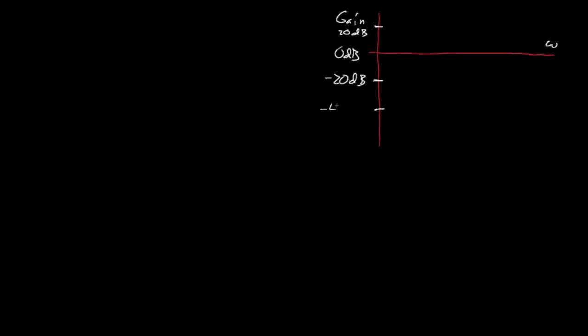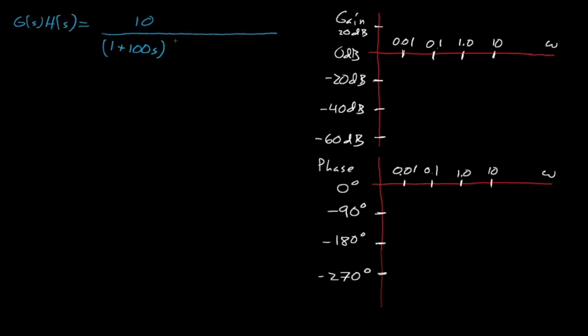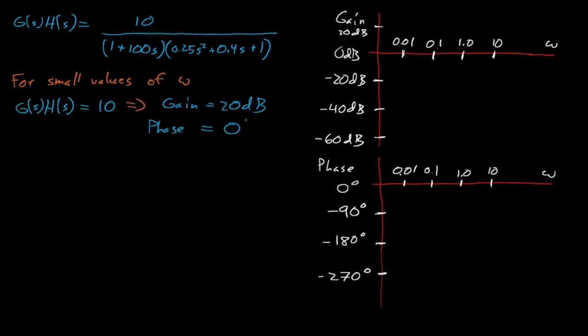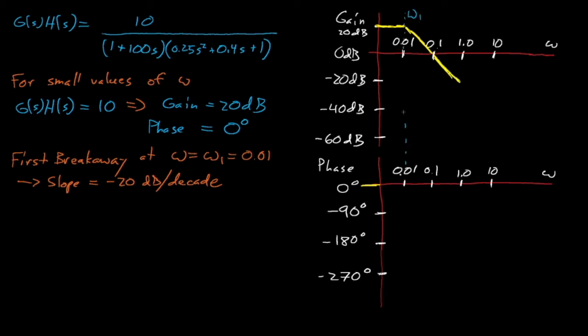Next, we'll generate our gain and phase Bode plots. For small values of omega, the gain is just equal to 10, or 20 decibels. And we see that our gain turns downward with a slope of negative 20 decibels per decade at omega 1, which again is 0.01.